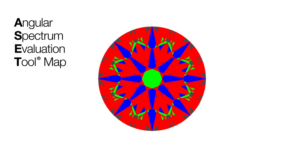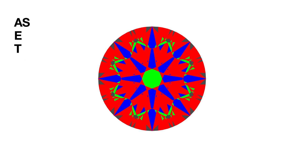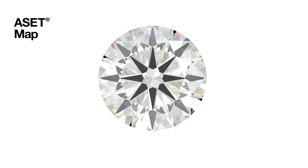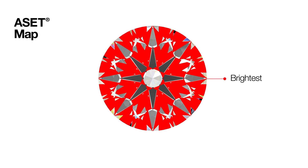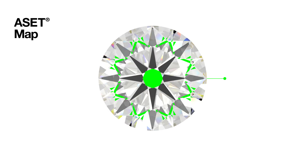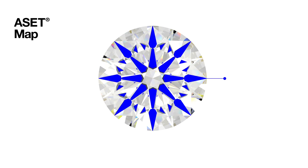In addition to the AGS Ideal Report, an asset map can reveal even more about a diamond's unique craftsmanship. The asset map traces individual rays of light. Red indicates the brightest areas of the diamond, capable of reflecting the most powerful sources of light. Green represents areas that are less bright, but still add brilliance and fire to the diamond. Blue indicates contrast — dark patterns that give the diamond its personality.